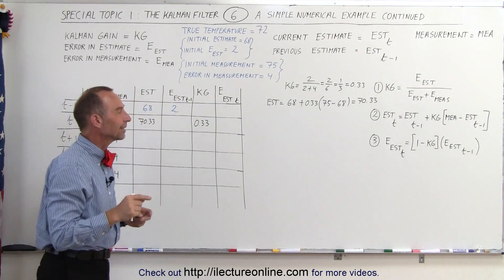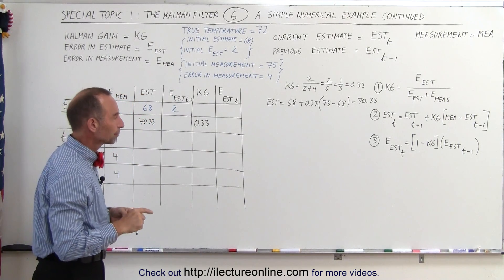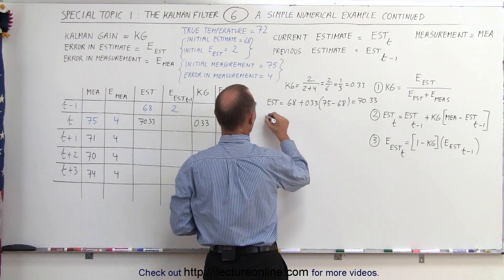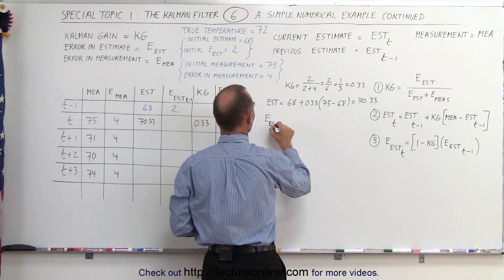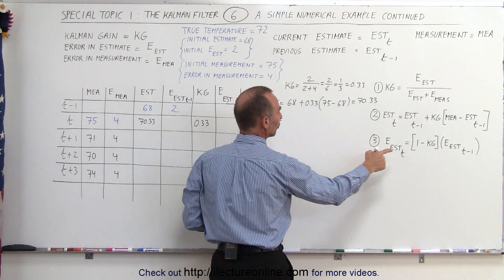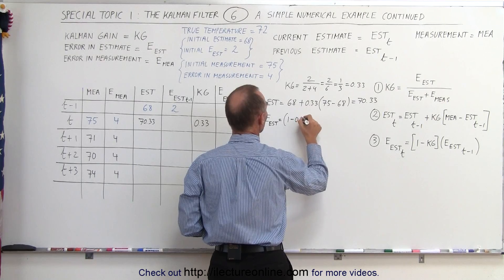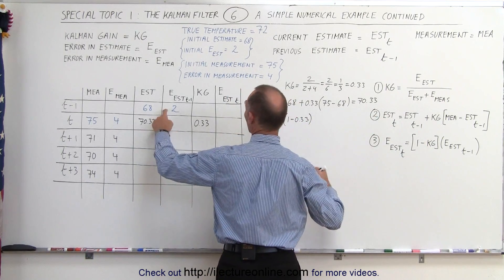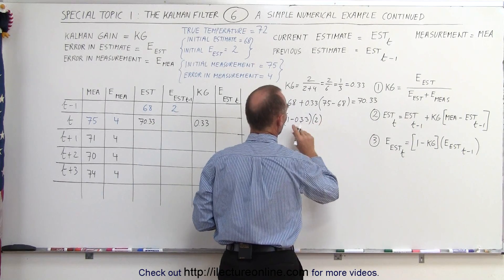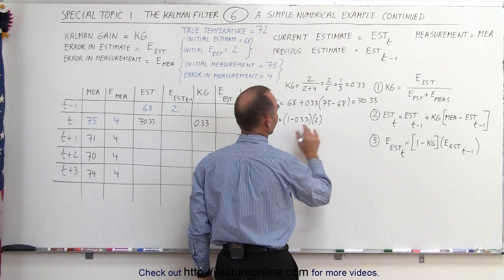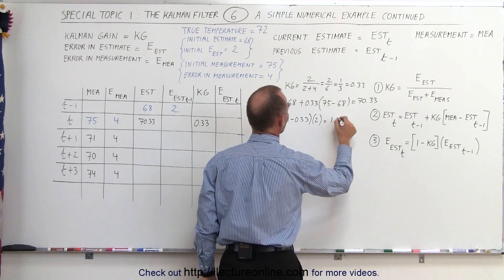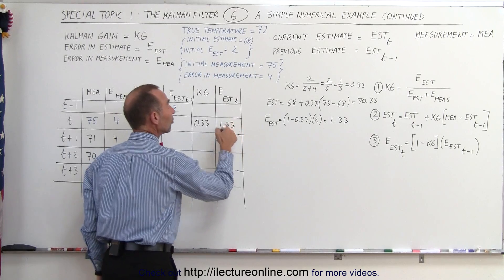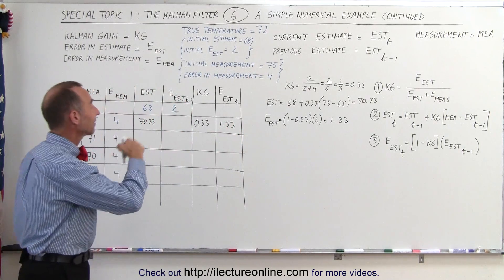Now we want to calculate the new error in the estimate. The error in the estimate is going to be equal to 1 minus the Kalman gain — 1 minus 0.33 — multiplied times the previous error estimate, which is 2. That would be 0.66 times 2, which equals 1.33, and that's going to be the new error estimate, 1.33, which is what's going to be used the next time around.